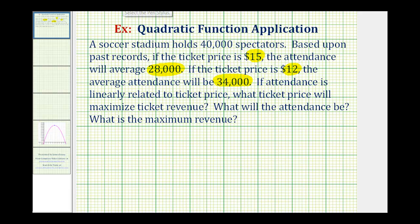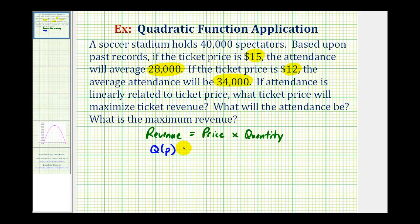There's a lot going on here, but we first have to understand that the revenue from the ticket sales is equal to the price of the tickets times the quantity sold. And the quantity sold is a linear function based upon the price of the ticket. So we want to find the quantity function Q of P, which because it's a linear function, we can write as M, the slope of the line, times the input P, the price of the ticket, plus B, the y-intercept of the line.